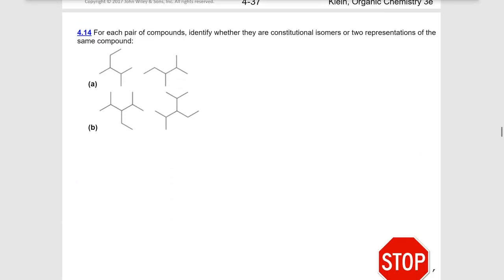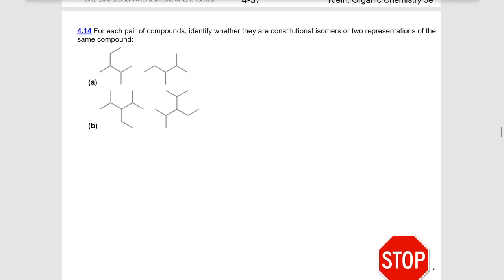For each of these pairs of compounds, we want to identify whether they are constitutional isomers or two representations of the same compound. Now again, you could make a model of these and compare, but another way to do that is to simply name them.